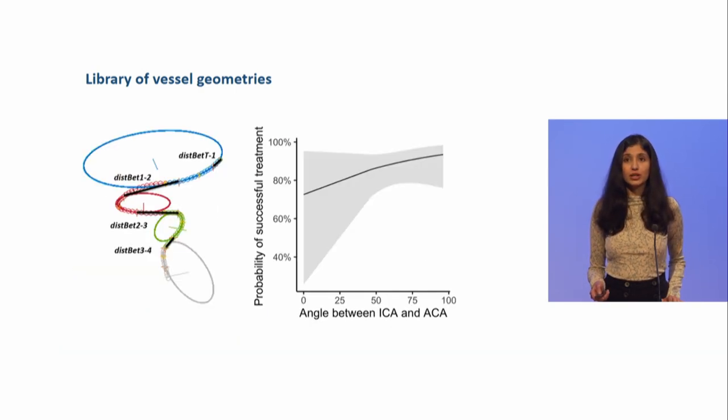Furthermore, we extracted more local geometry characteristics, and we assessed the association between the local geometry characteristics and the probability of a successful outcome. And we found that the angles in the intracranial T-junction are very important, and associated with the probability of getting a successful treatment.